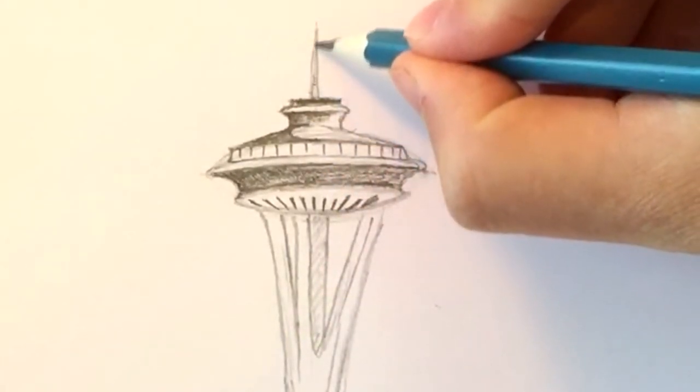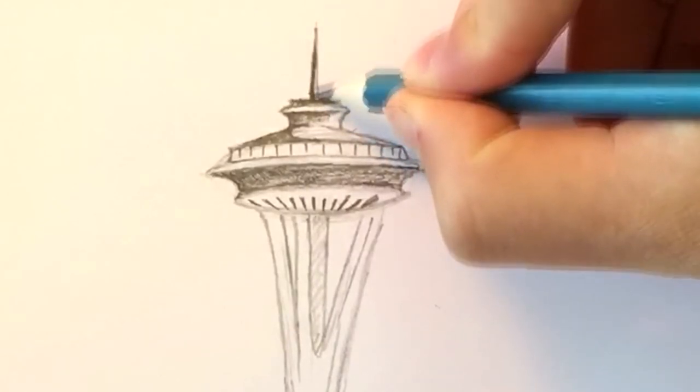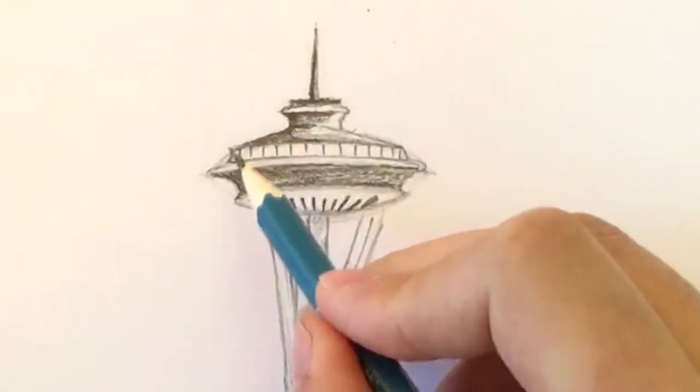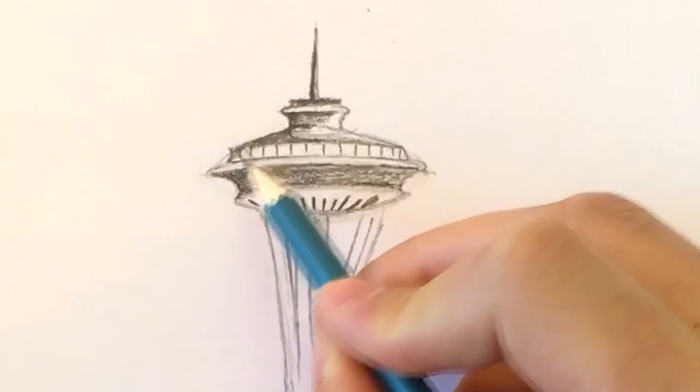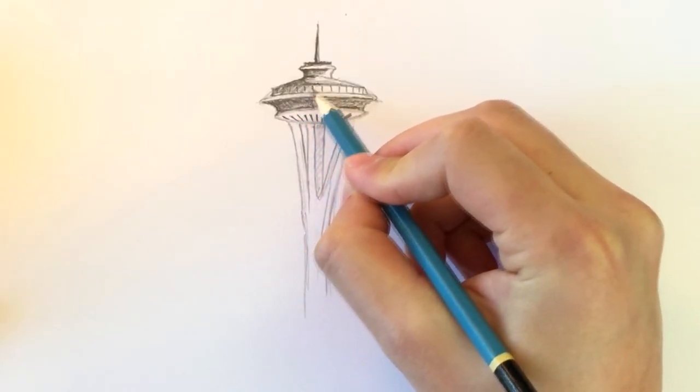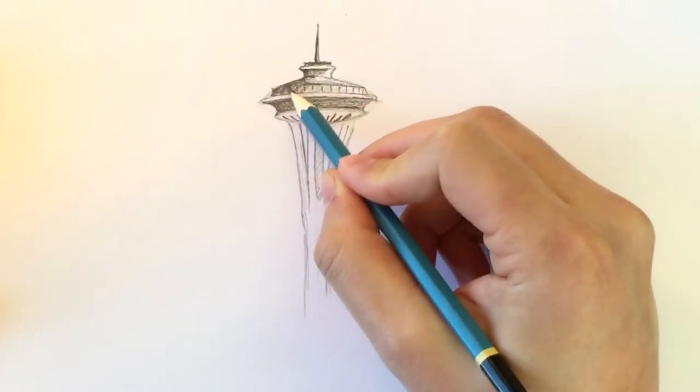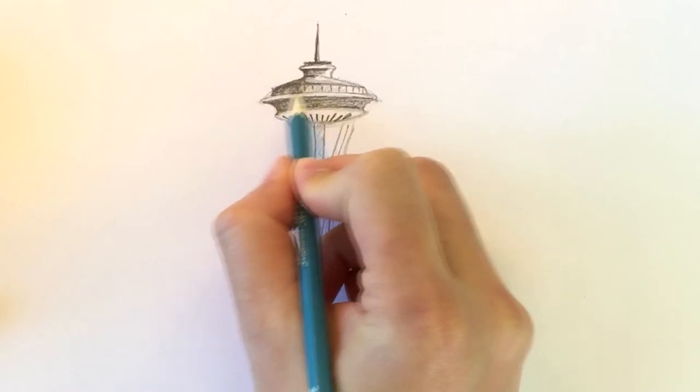And the needle itself, mostly the left side. Now, let's add some shade to the windows of the observation deck. You see, still darker on the left side and gradually going lighter on the right.